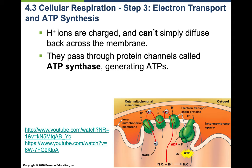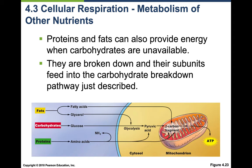Proteins and fats can also provide energy when carbohydrates aren't available. Your mitochondria primarily run on carbohydrates — carbs are important for body function even though it's important not to eat too many. Carbohydrates, fats, and proteins are all broken down in the pathway and pushed into the mitochondrion for respiration.